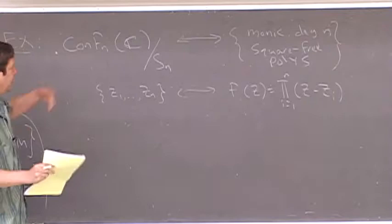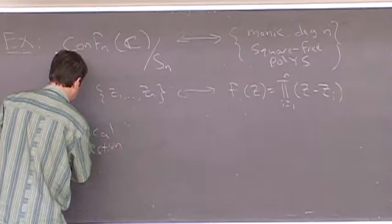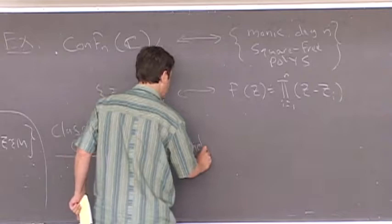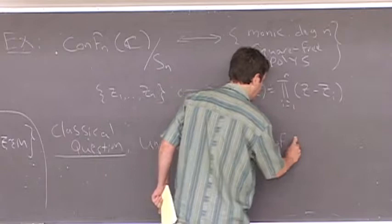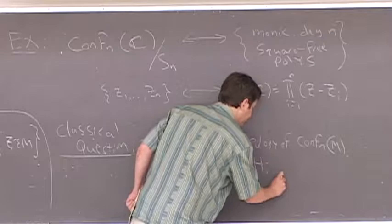The bijective correspondence works as follows: if I have a set of unordered points, this corresponds to the polynomial f(z) = product of (z − z_i) for i from 1 to n. Square-free is exactly saying the points are distinct. Conversely, if I have a square-free polynomial with distinct roots, you factor it completely over C and mark down where the roots are. The classical question, which has seen intense study, is to understand the topology of this space. For example, compute its homology and cohomology.